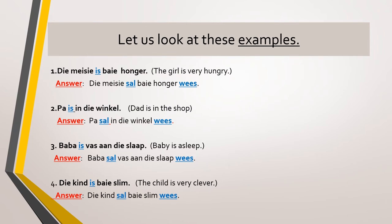Children, let's look at these examples. Notice that all these sentences have es as a werk word. So I am now going to read the sentences to you and change it into to commenditate. Number one: di meisi es baya honger — the girl is very hungry. Di meisi sal baya honger vers.